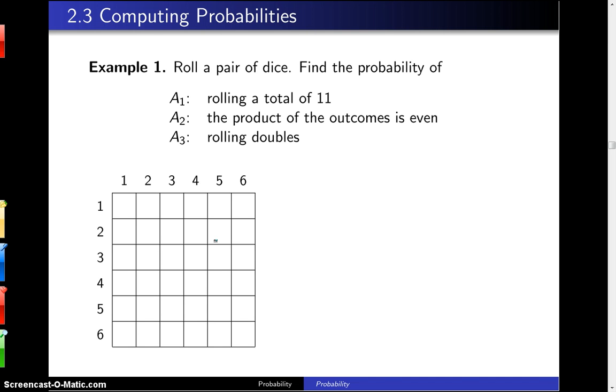The first event is rolling a total of 11 between the two upfaces, second event the product of the outcomes is an even number,